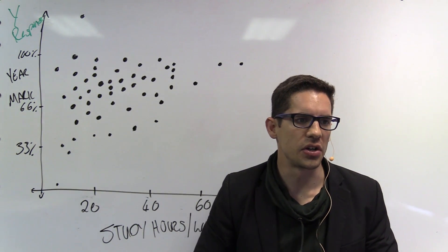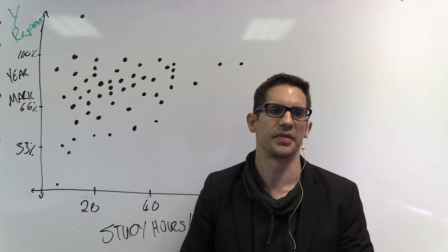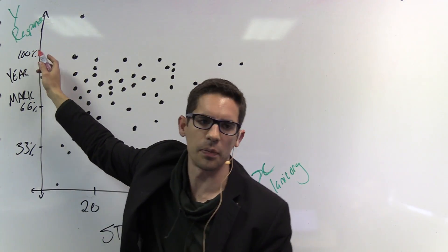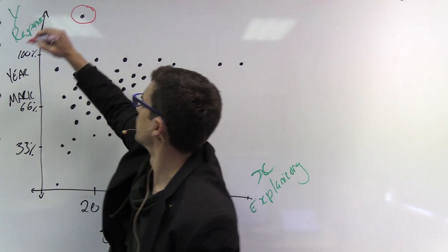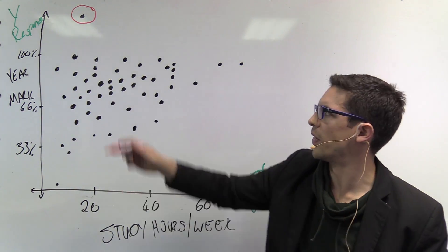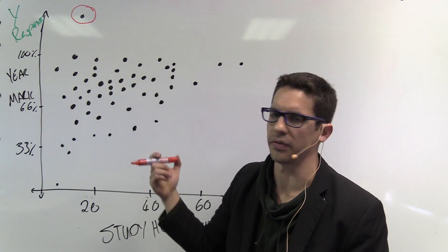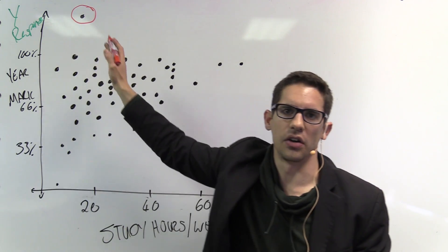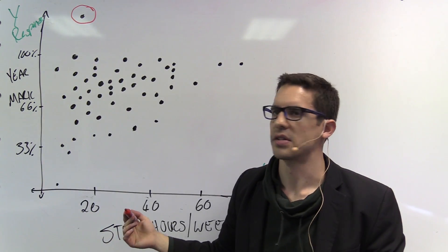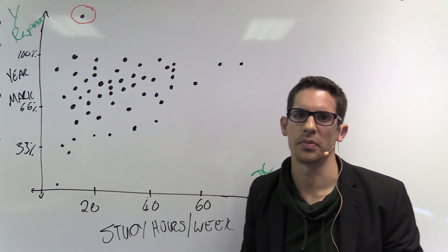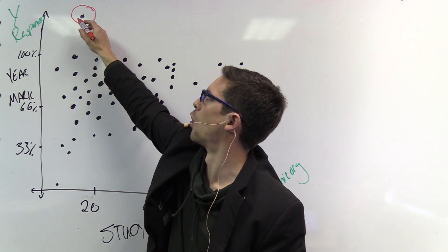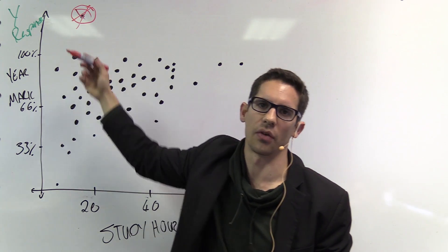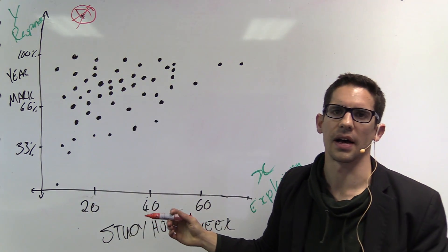The next question asks us to describe the relationship between the two variables and discuss any unusual observations. Starting with unusual observations: we see a value above 100% on the y-axis. We don't expect a student to get more than 100% as a final year mark — it's not possible at university — so this is clearly an unusual observation. In this case, we can say that's probably a data error where somebody captured a student's mark as higher than 100%. If doing an analysis, we would typically want to ignore that point because it's clearly wrong.